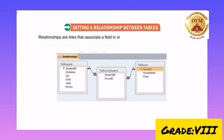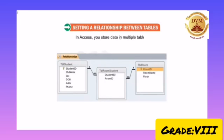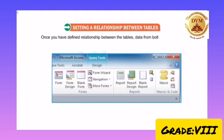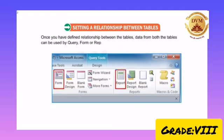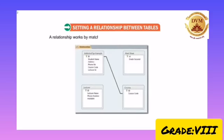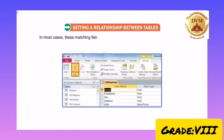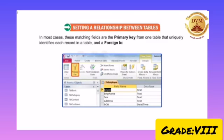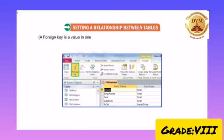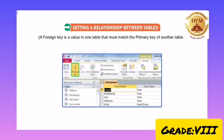Setting a relationship between tables: Relationships are links that associate a field in one table with the same field in another table. In Access, you can store data in multiple tables. To bring the information together, you need to define relationships between the tables. Once you have defined a relationship between the tables, data from both tables can be used in queries and reports. A relationship works by matching a field with the same name in both tables. In most cases, these matching fields are the primary key from one table, which uniquely identifies each record, and a foreign key in the other table. A foreign key is a value in one table that must match the primary key of the other table.